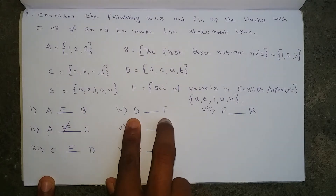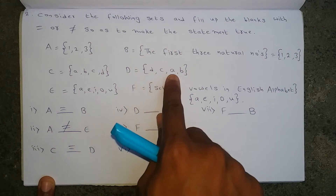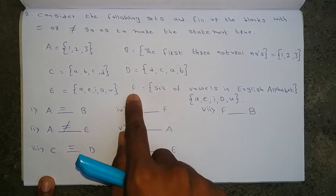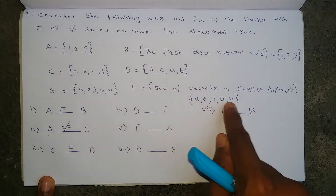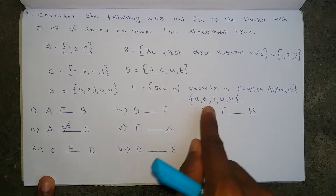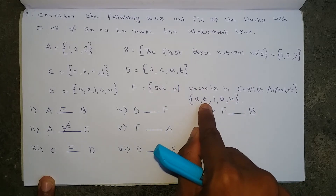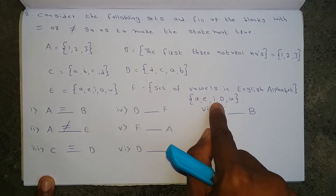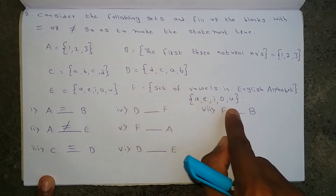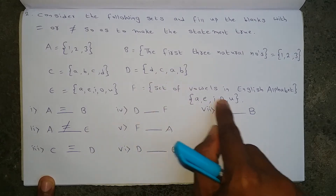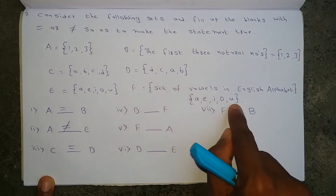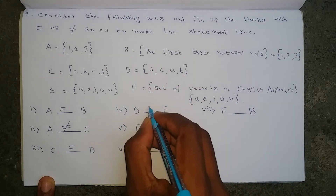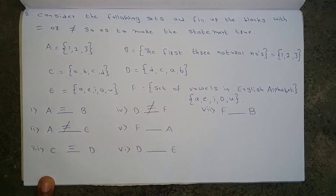Next, set D and set F. Set D has A, B, C, D — four elements — whereas set F has A, E, I, O, U — five elements. Element E is in set F but not in set D. Elements I, O, and U are in set F but not in set D. So D and F are not equal.